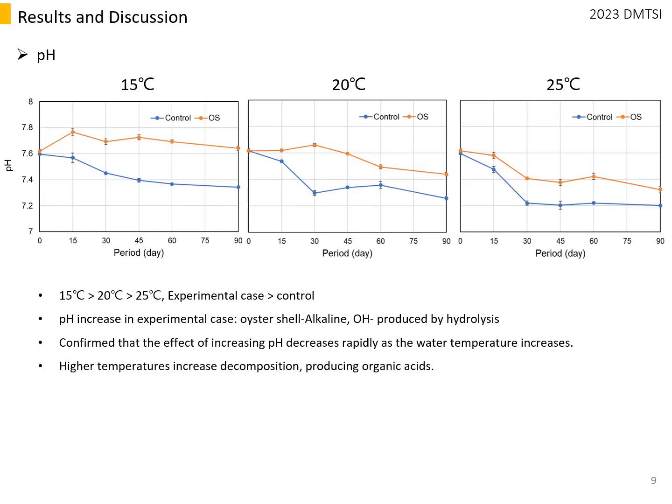The experimental pH ranged from 7.3 to 7.8, and the control ranged from 7.2 to 7.6. The higher the water temperature, the lower the pH, and the pH of the experimental cases was always higher than that of the control. Oyster shell is an alkaline substance and pH rises through hydrolysis, and the change in pH stabilized after a certain period of time.